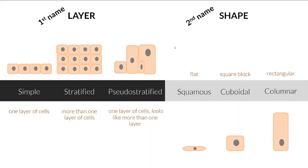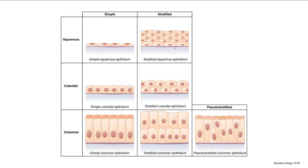Epithelial tissue is named with a first name and a second name. The first name is about layering: one layer is called simple, more than one layer is stratified, and one layer that looks like more than one is pseudostratified. The second name is about shape: squamous means flat like a tile, cuboidal is like a square building block, and columnar is more like a brick. We can categorize by whether it's simple or stratified, then by whether the cells are squamous, cuboidal, or columnar.